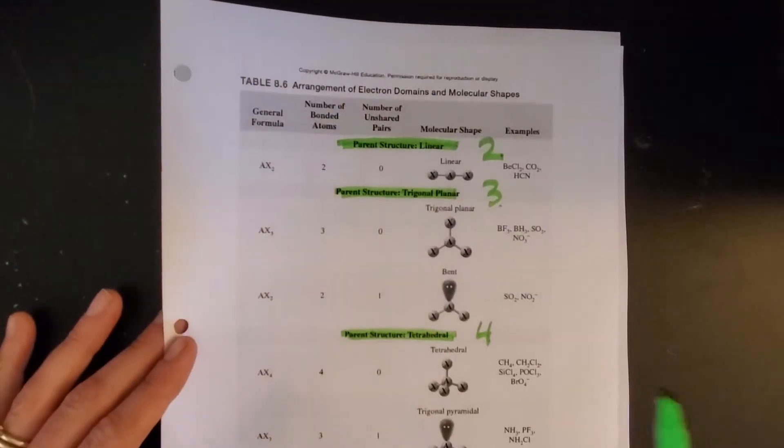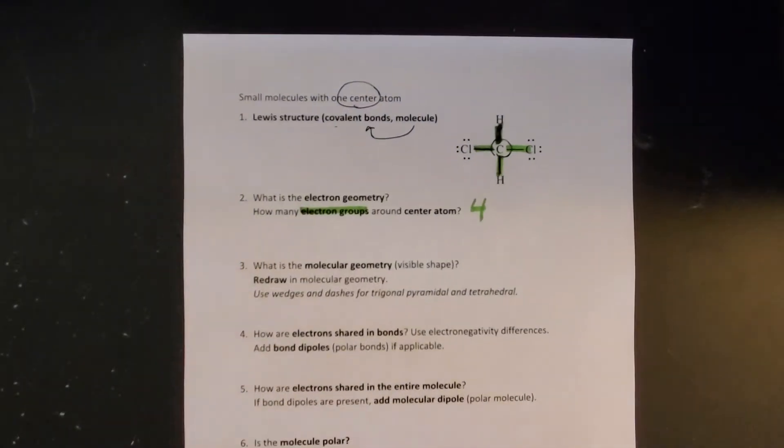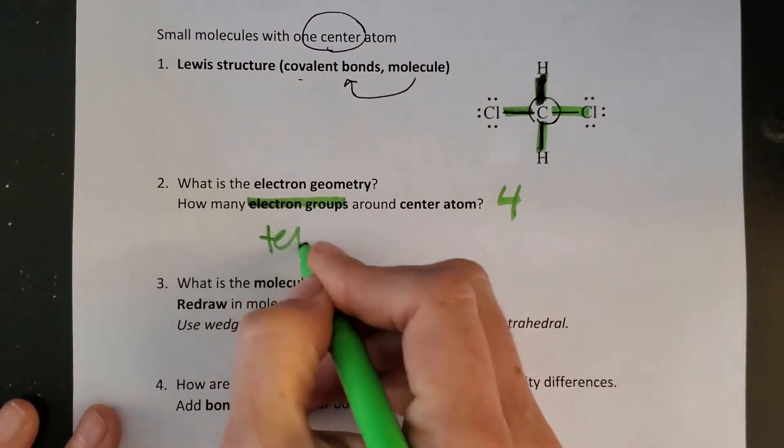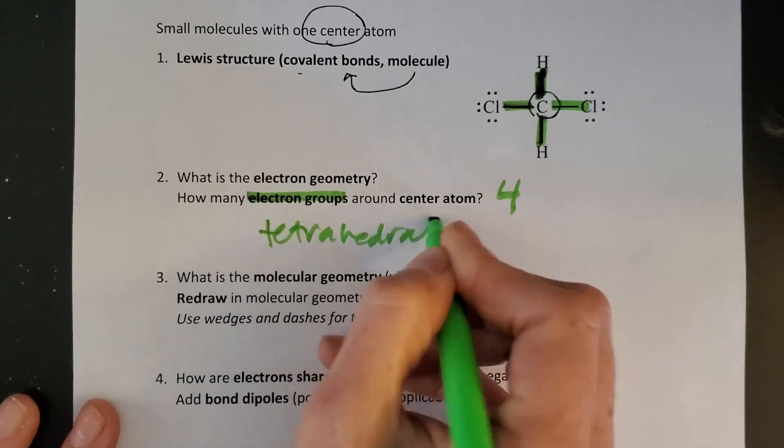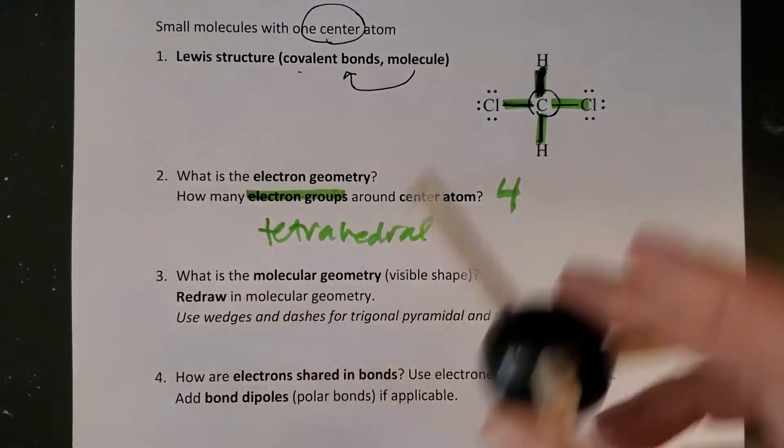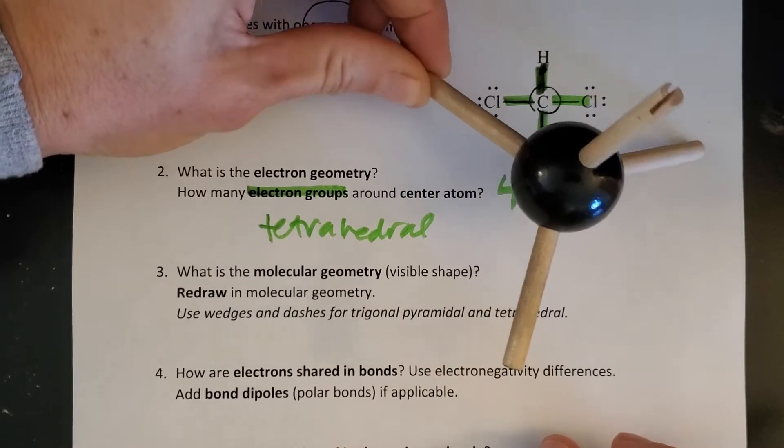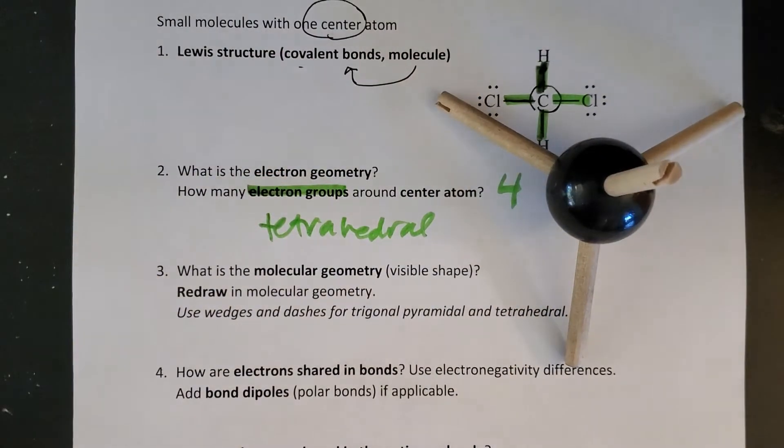So we have four electron groups therefore tetrahedral. And if I look at this as a model it might look something like this so you can see this is our tetrahedral electron geometry.